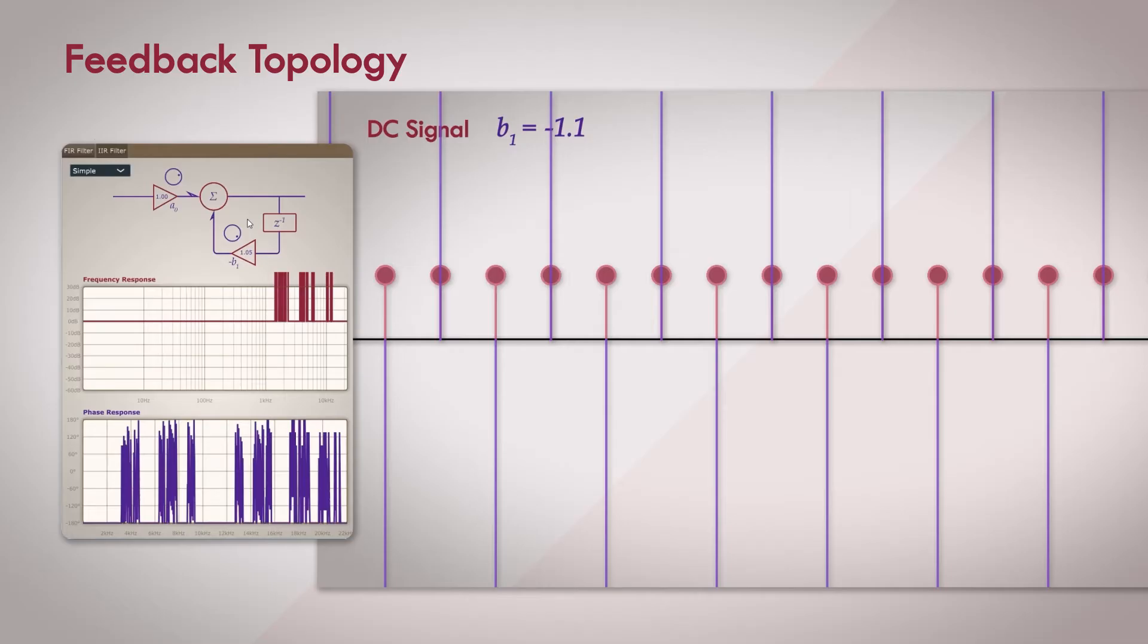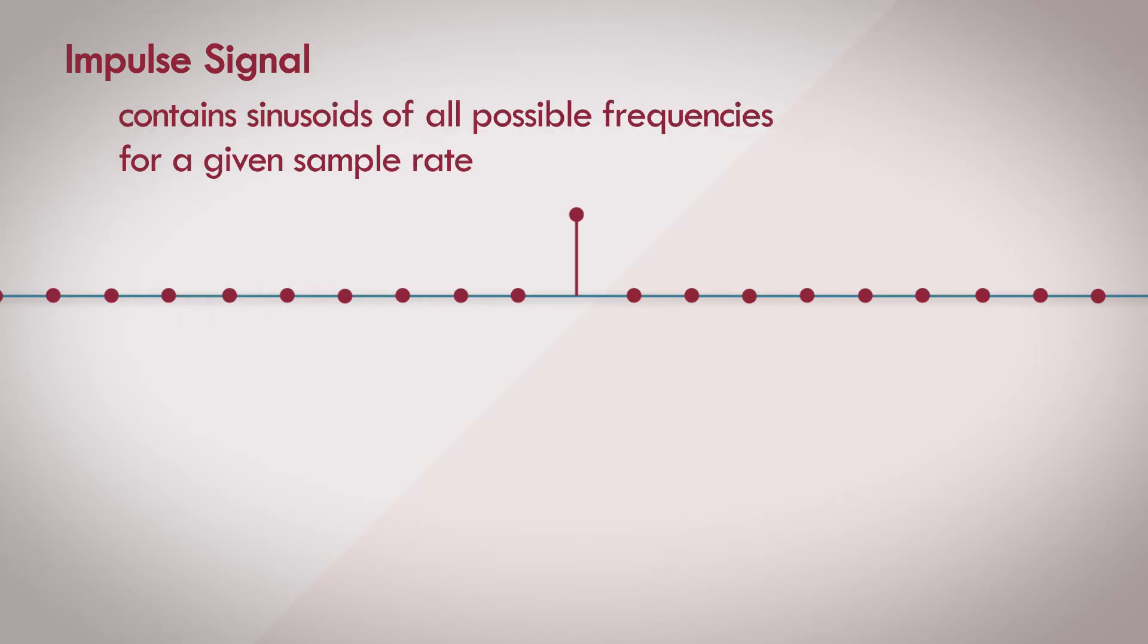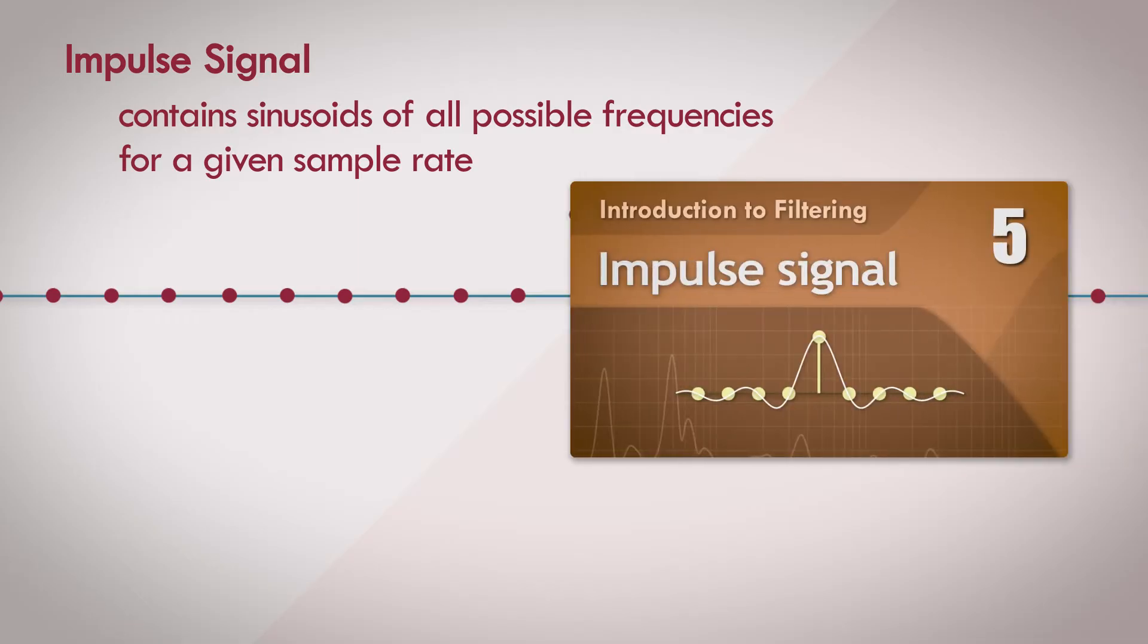Now it's time to look at the system as a whole and observe the characteristics of the filter for all possible frequencies. Let's reintroduce our handy impulse signal: a single sample of one in an infinitely long stream of zeros. The impulse signal contains sinusoids of all possible frequencies for a given sample rate. If this claim baffles you, check out the video on the impulse signal that I did earlier.